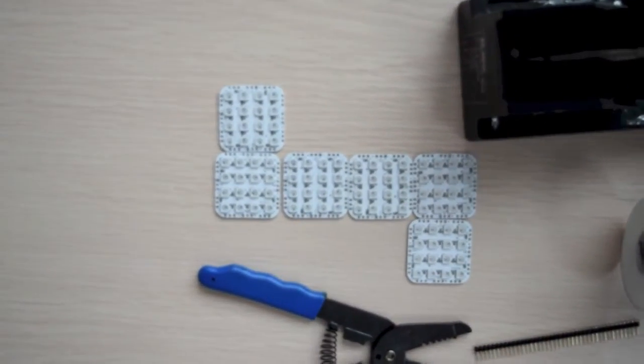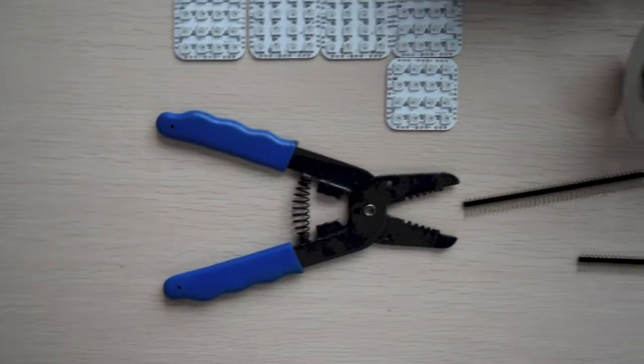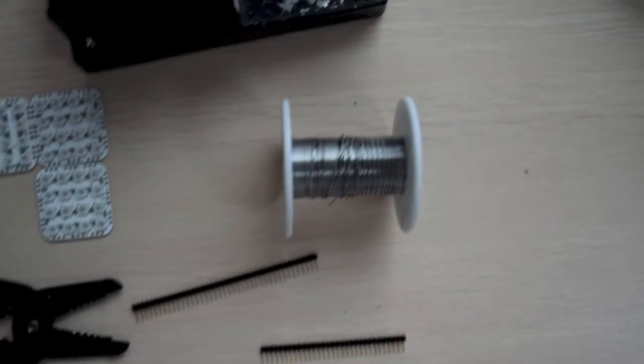Firstly you'll need your six LED matrix boards, a pair of wire crimpers, pin male headers, soldering wire and of course your soldering iron.